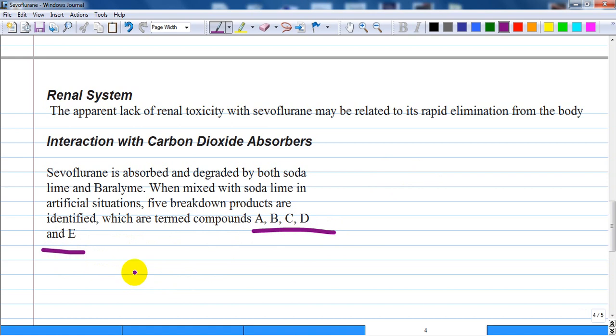These products are thought to be toxic in rats, primarily causing renal, hepatic, and cerebral damage. However, in clinical situations it is mainly compound A and to a lesser extent compound B that are produced.